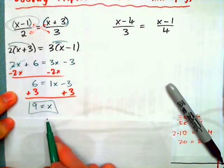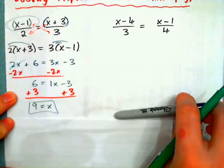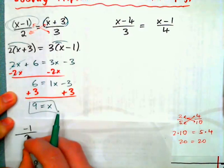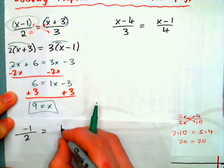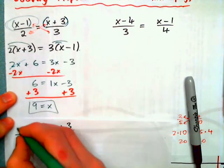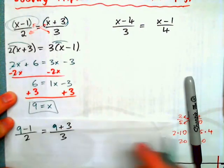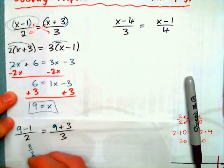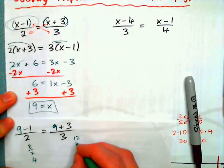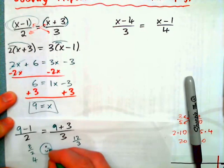So if we were to check the answer in the original equation, we would get something minus 1 over 2 is equal to something plus 3 over 3. So plug 9 in for x. So we get 9 minus 1 over 2 equals 9 plus 3 over 3. 9 minus 1, that's 8. 8 over 2 is indeed 4. 9 plus 3 is 12. 12 over 3 is indeed 4. And so we have 4 equals 4. That is the correct answer. Smiley face.